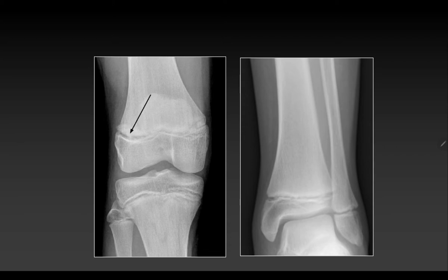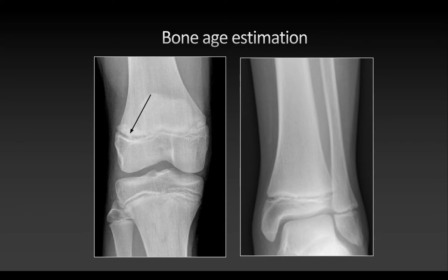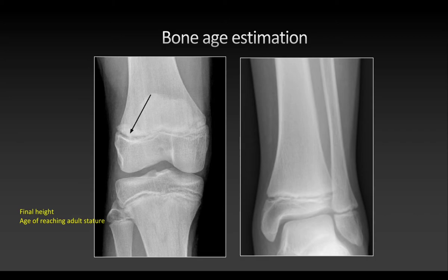These fusion lines are important because each bone's ossification center fuses with the shaft at a different period of time, which is used in bone age estimation. For example, if the lower end of femur and upper end of tibia have not fused with the shaft, this person is probably below the age of 18, since fusion occurs at 18. This allows us to say a person is underage and must be treated as a juvenile. Bone age estimation is also important for estimating final height, predicting when adult stature will be reached, and determining when puberty will occur.